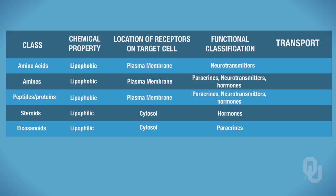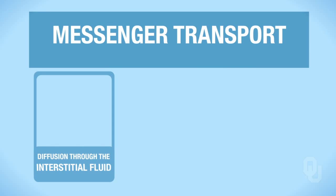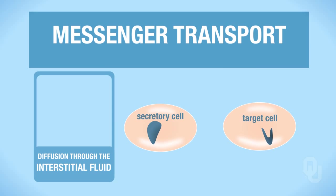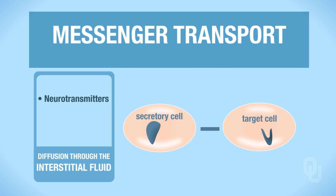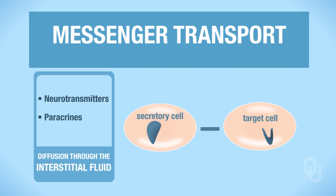We have two different options for transport. One: transport of your ligand through the interstitial fluid. Or two: bloodborne transport. If diffusion is only through the interstitial fluid, then the secretory cell and your target are nearby. This would include your neurotransmitters and your paracrine signalers. These ligands will not stay around forever, however — they are quickly degraded when diffusion occurs through the interstitial fluid.